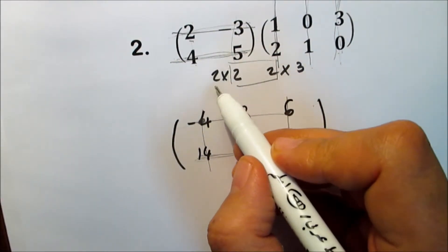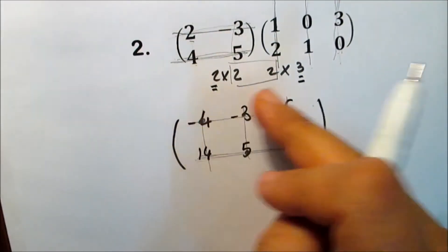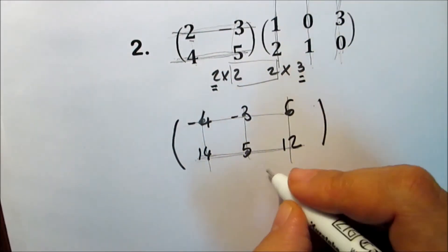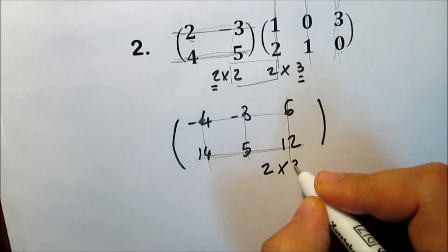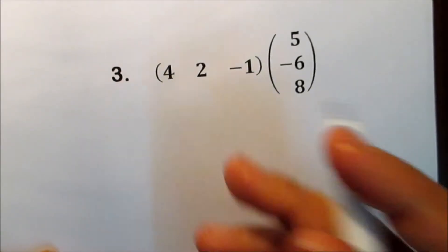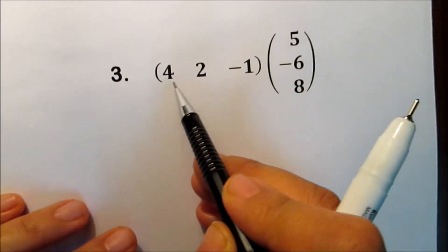The order of the new matrix is 2 by 3 — the two outside numbers — so 2 by 3. Another example: multiply the two matrices.